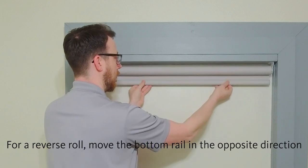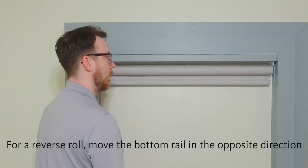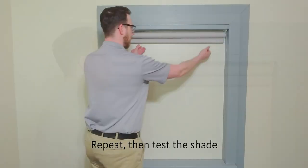If the shade is a reverse roll, move the bottom rail in the opposite direction. Do this two times, then test the shade.